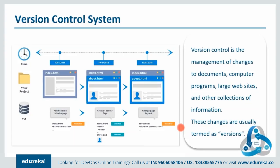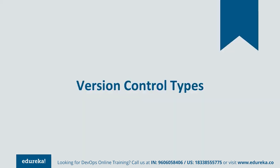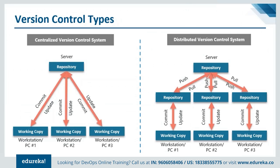I hope you've understood what versions are and what a version control system is. Let's get into the different types of version control systems. There are three types: the local version control system, the centralized version control system, and the distributed version control system.